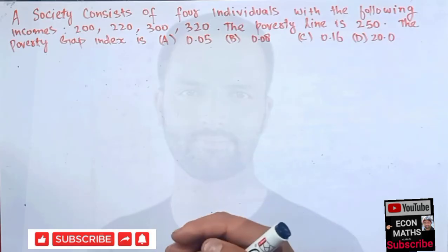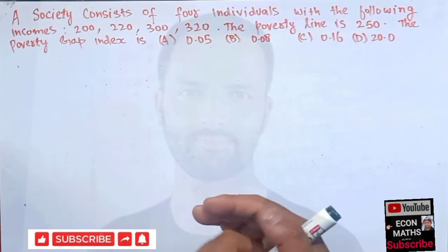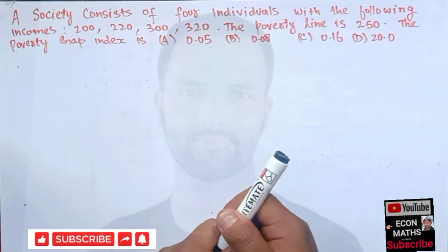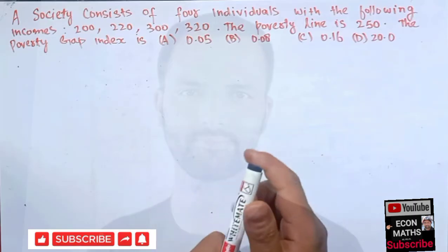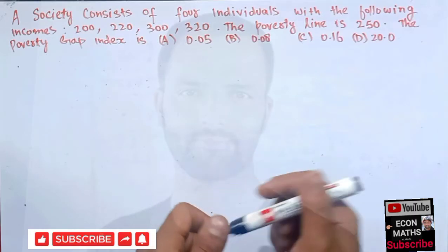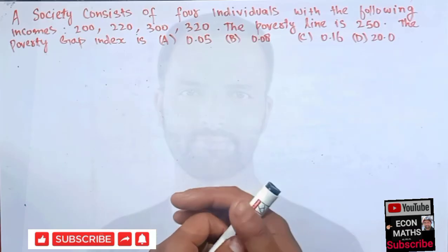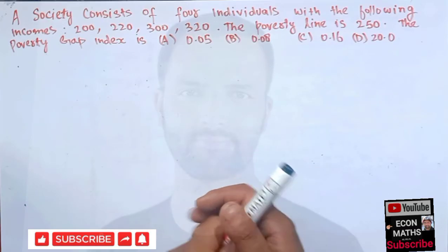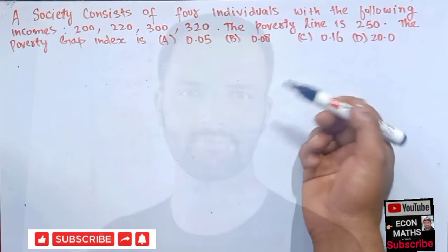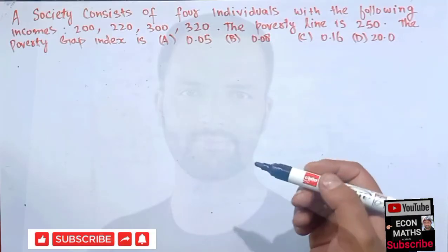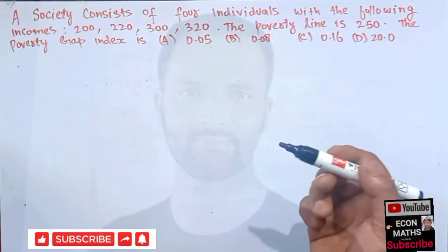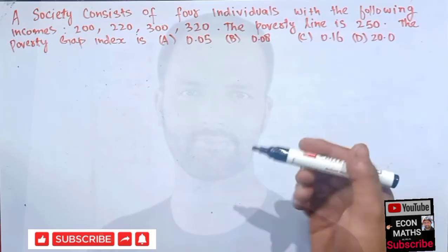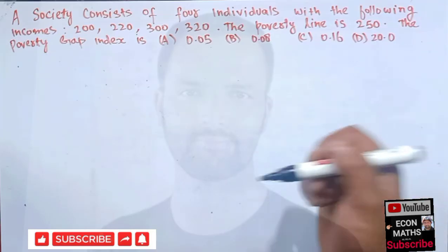First, let's give a brief introduction to the poverty gap index. It simply means the extent to which individuals, on average, are below the poverty line. It is expressed as the percentage of people below the poverty line, or as a percentage of the poverty line.